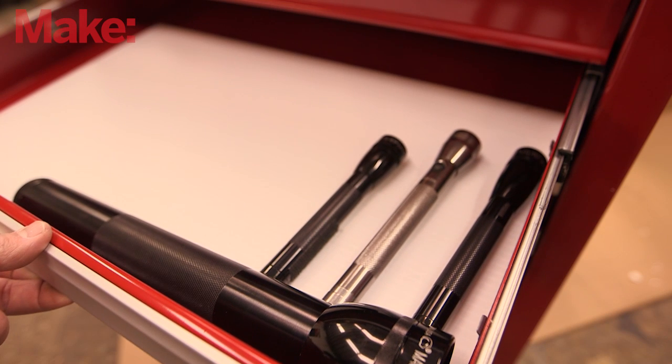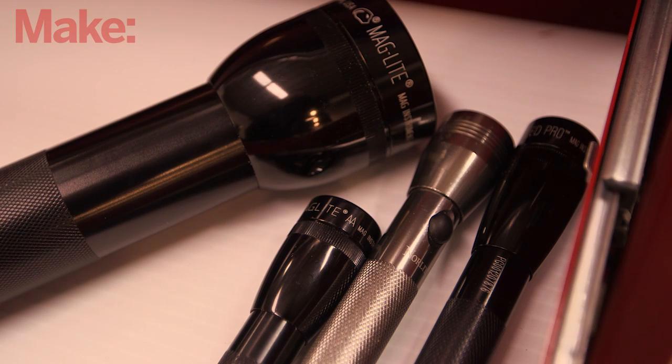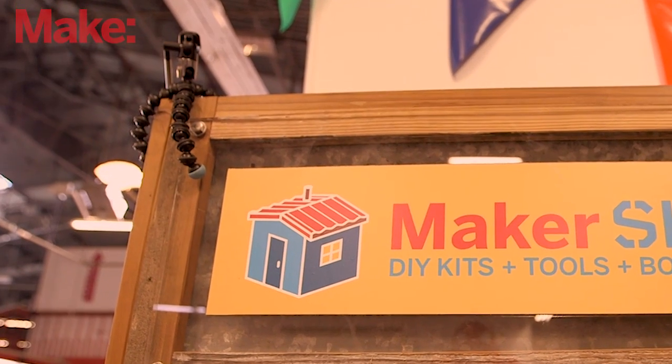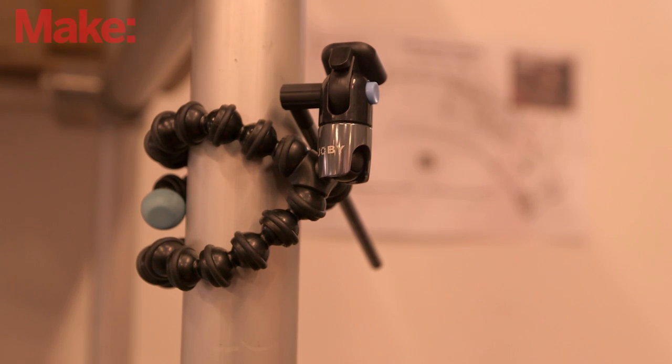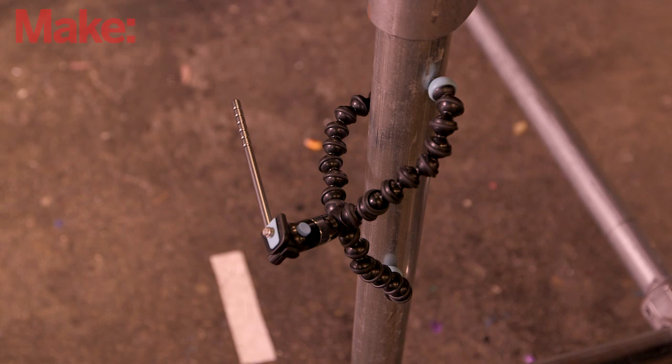I went to my flashlight drawer and realized I have all these different flashlights, including a few Maglights, but all I really needed was the tripod. I remember seeing that Makershed sold a GorillaPod camera flexible tripod with magnetic feet, and that's when the light bulb went on.